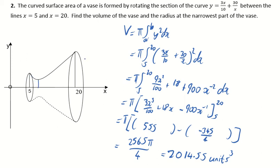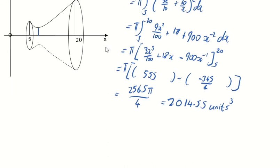The narrowest part of the vase is going to be here. That's what it's going to be, and this is, if you think about what this is, this is the lowest point of this curve, y is equal to 3x over 10 plus 30 over x. So we've got to use differentiation to do this.